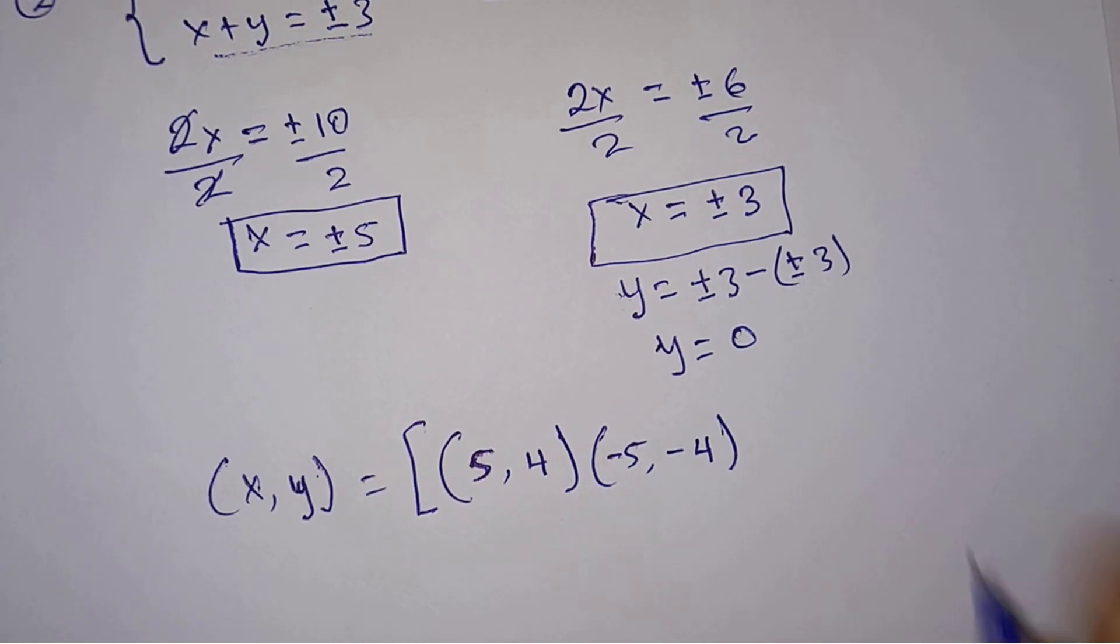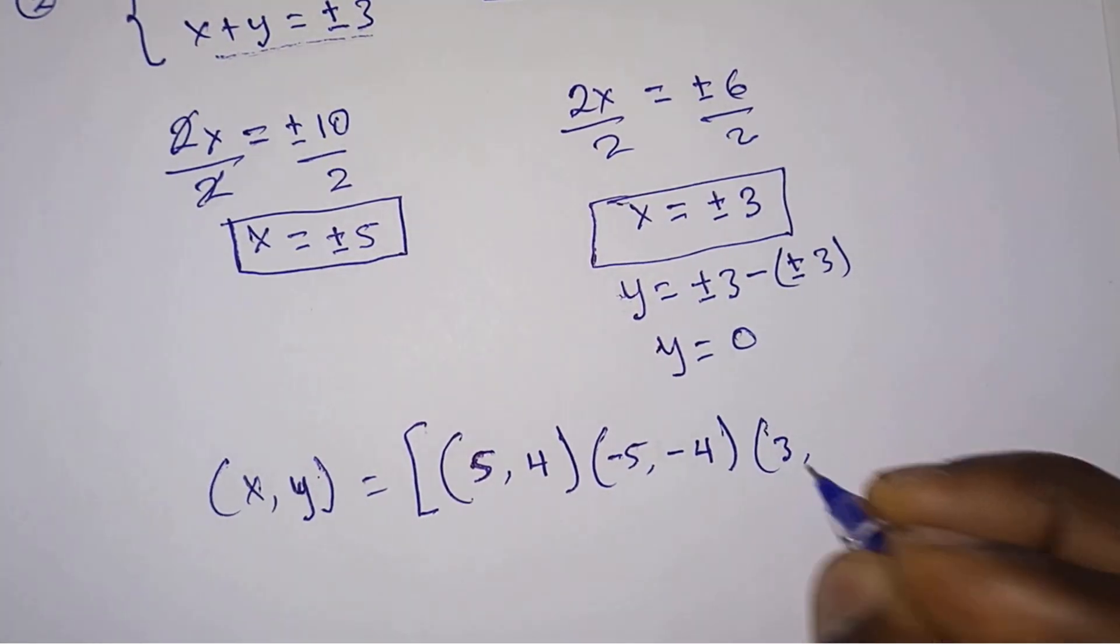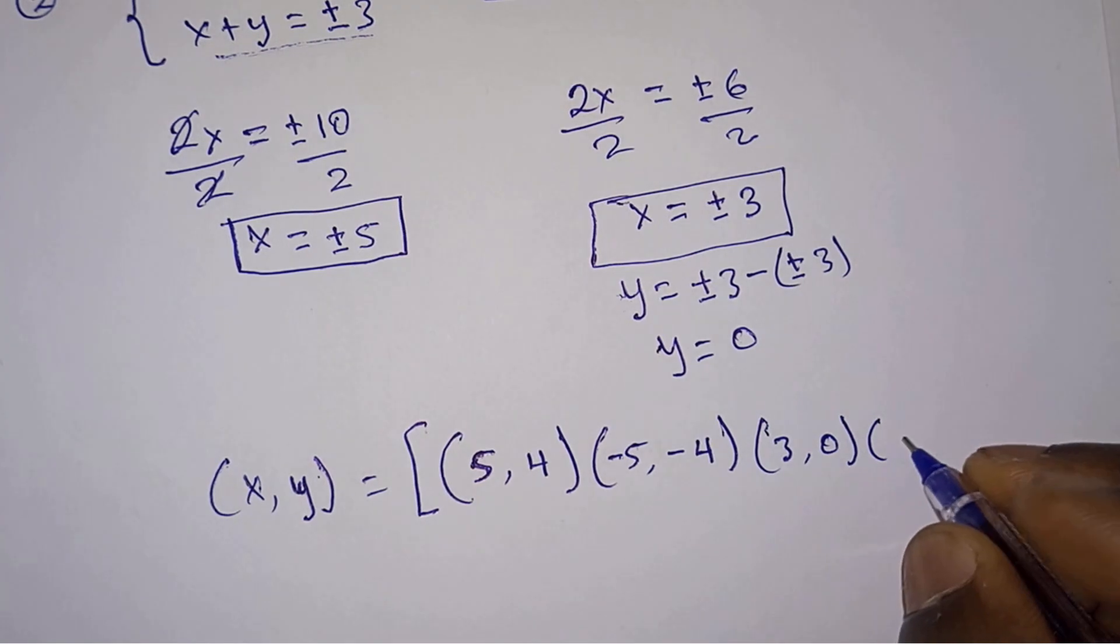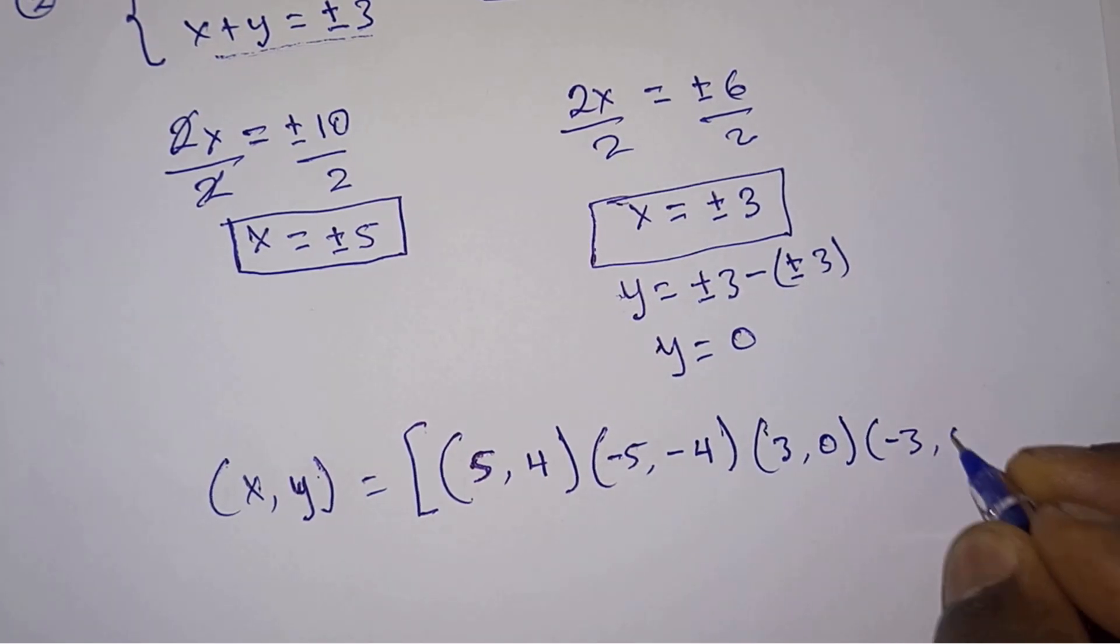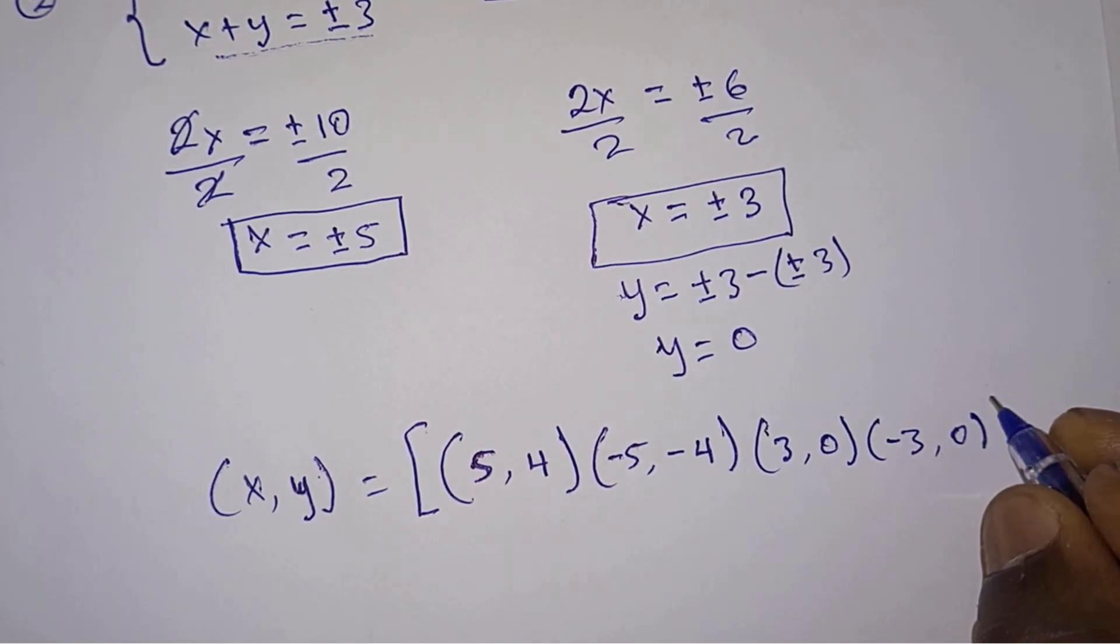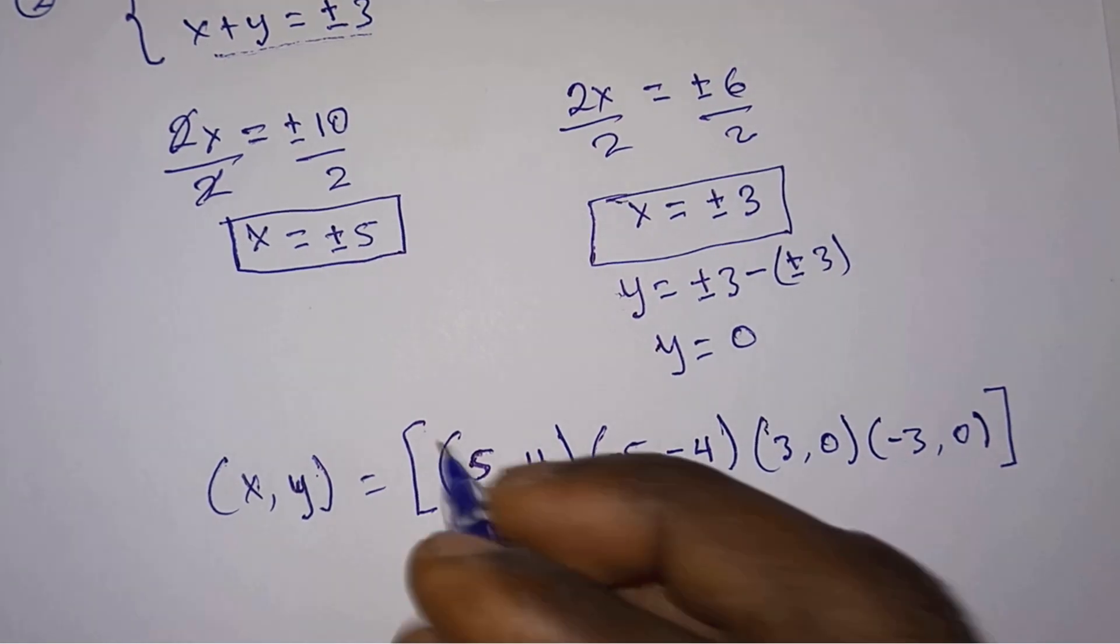Then we also have: when x is 3, y is 0; and when x is negative 3, y is also 0. So these are the solutions to the problem.